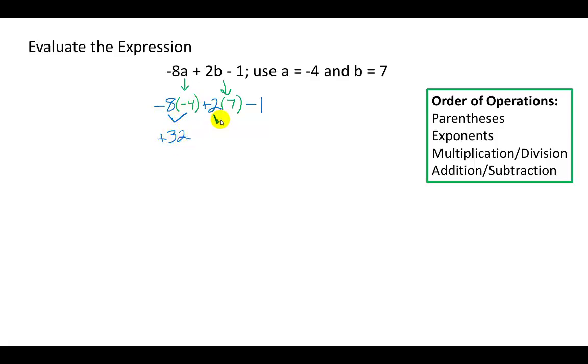2 times 7 is another multiplication problem. Positive times a positive is a positive. 2 times 7 is 14. And then we need to remember to bring down the -1.